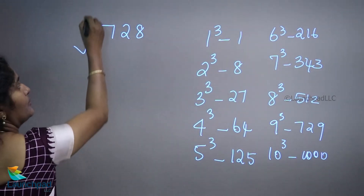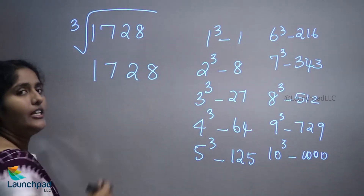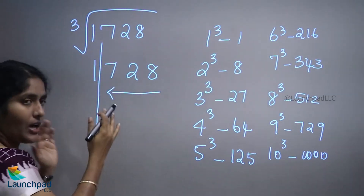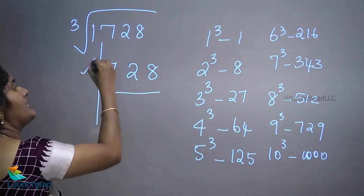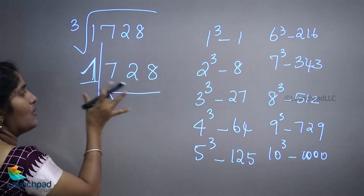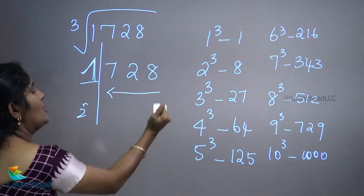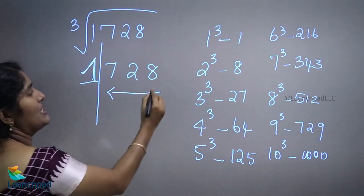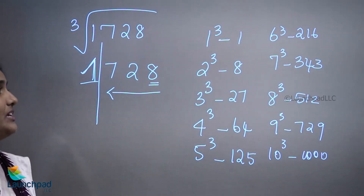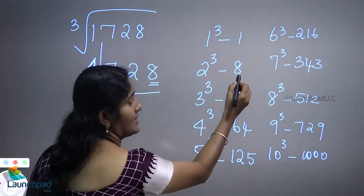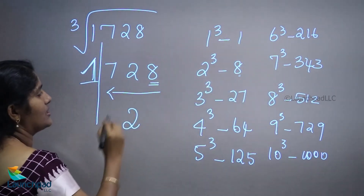Let's take the example: cube root of 1728. Take the value 1728. You want to split this number from the right-hand side into groups of 3 digits. So here the first part is 1 and the second part is 728. Observe the first part — the unit digit value is 8. Which cube answer has an ending digit of 8? That is 2 cubed equals 8, so the unit digit of the answer is 2.